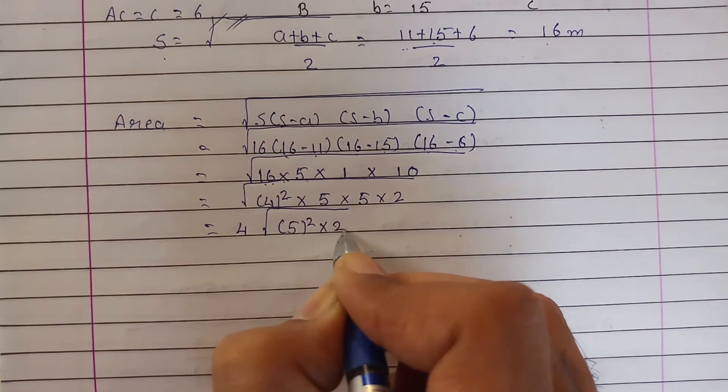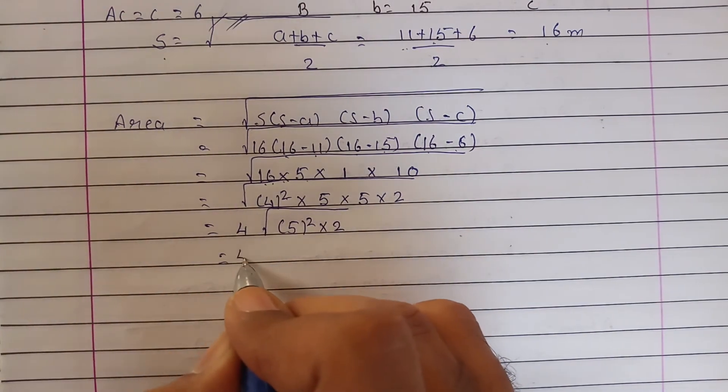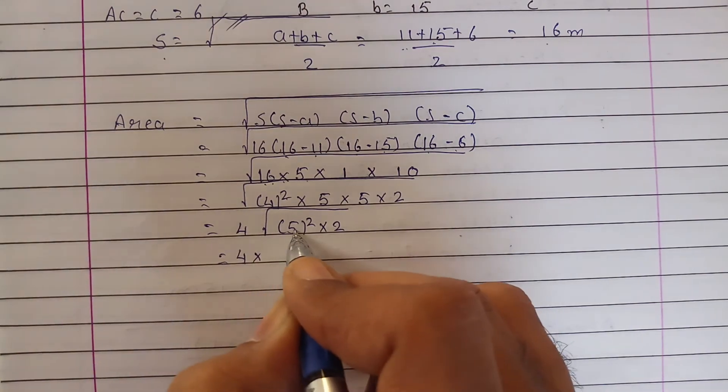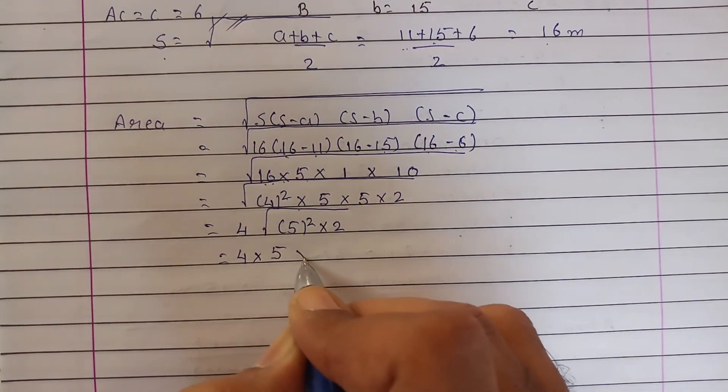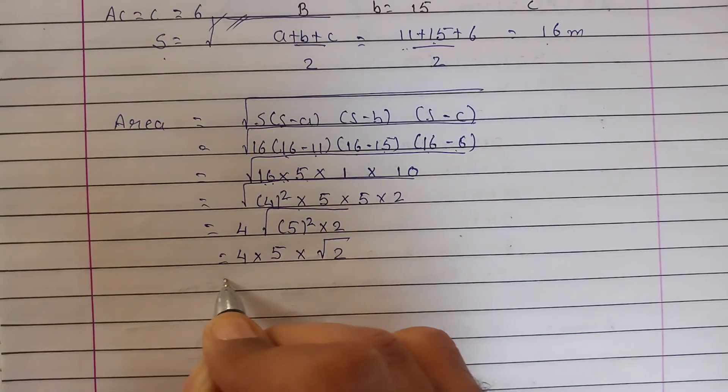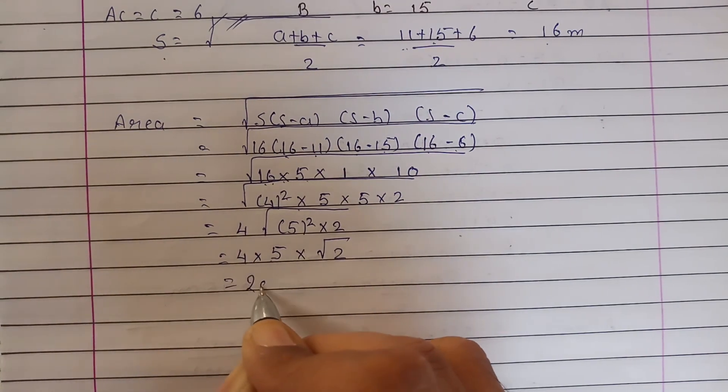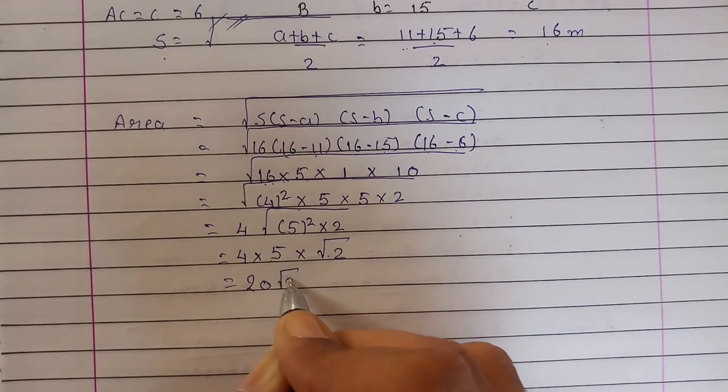4 will remain as it is, 5² under square root becomes 5. So 5×4 = 20, and root 2 will remain as it is. So we have 20√2.